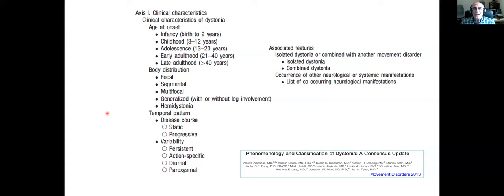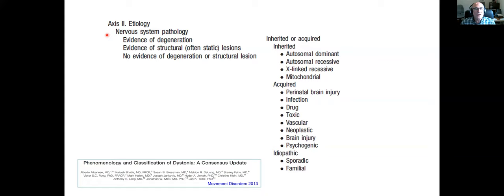Axis two is the etiology. There were two ways of thinking about this: one was whether there was nervous system pathology of some kind that could be identified — for example, a structural lesion, or maybe there was no lesion that could be seen. Another way of thinking about it is whether it is inherited or acquired, or if it's idiopathic — that is, unknown where it would come from.